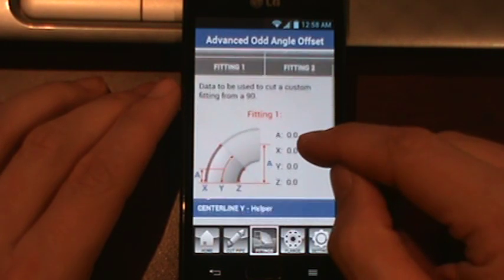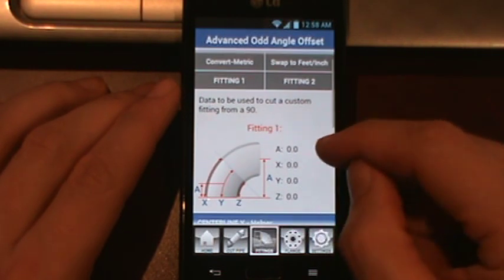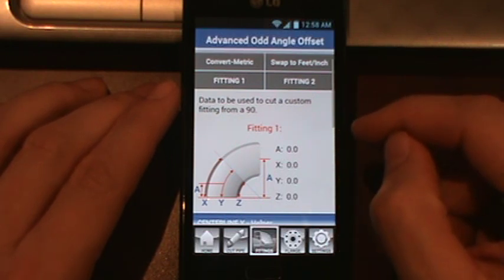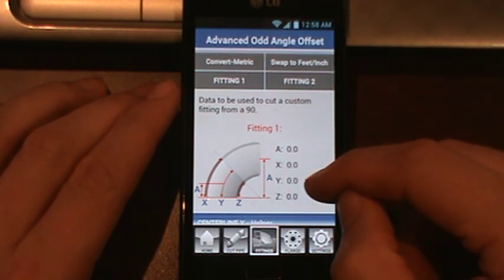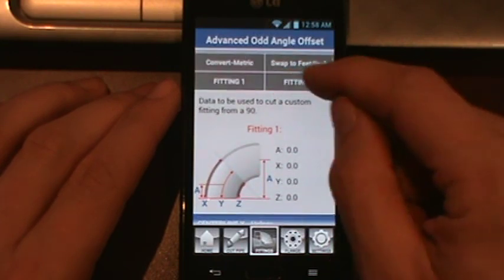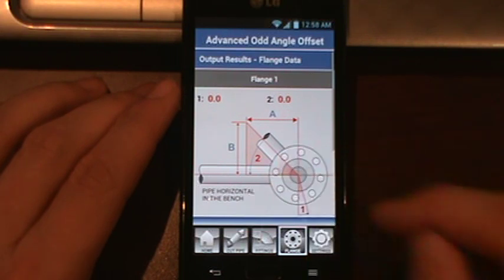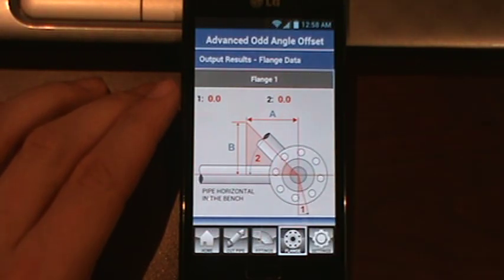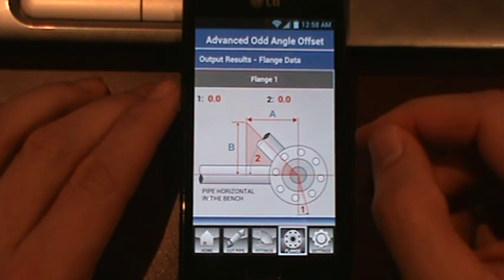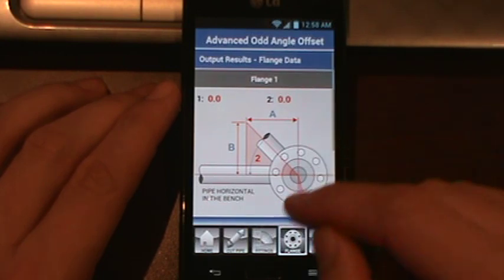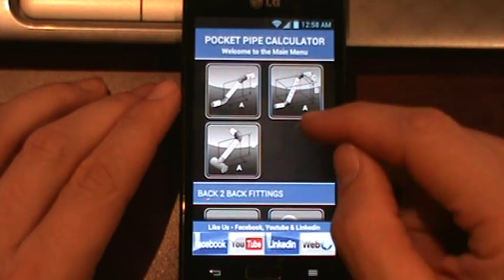Here's some fitting data. This will show you the angle of the fitting, the takeout of the fitting, and the dimensions to cut a custom fitting out of a 90. You'll be able to toggle back and forth from fitting 1 and fitting 2. Your flanges, this will give you a 2 hole alignment for fabricating horizontally in the bench in order to give you an accurate 2 hole in the field. That's the basic rundown for that screen.